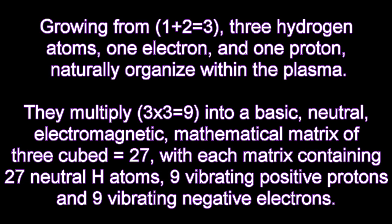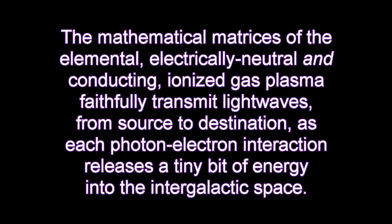Growing from 1 plus 2 equals 3, three hydrogen atoms, one electron, and one proton naturally organize within the plasma. They multiply 3 times 3 equals 9 into a basic neutral electromagnetic mathematical matrix of 3 cubed equals 27, with each matrix containing 27 neutral hydrogen atoms, nine vibrating positive protons, and nine vibrating negative electrons. These mathematical matrices of elemental, electrically neutral, and conducting ionizing gas plasma faithfully transmit light waves from source to destination, as each photon-electron interaction releases a tiny bit of energy into the intergalactic space.